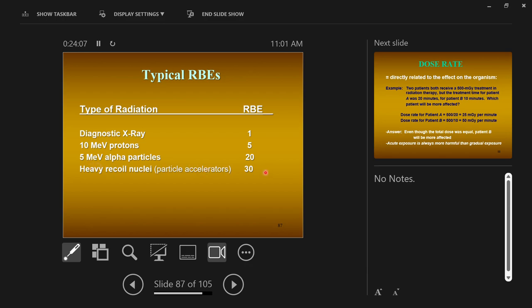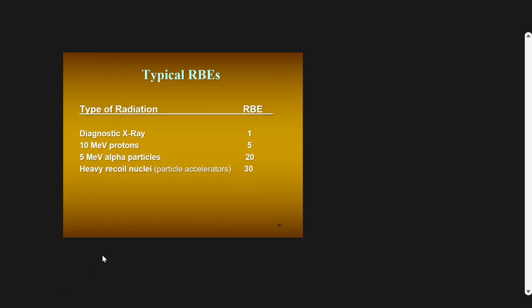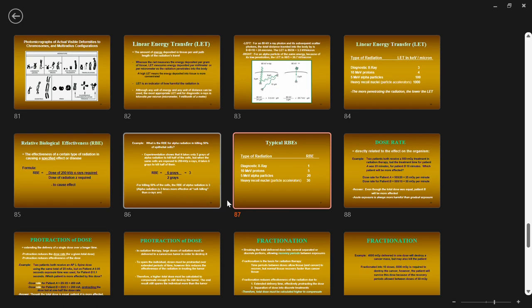And lastly, heavy recoil nuclei — big particles — have an RBE of 30, so 30 times more harmful than x-rays. So that's LET and RBE.